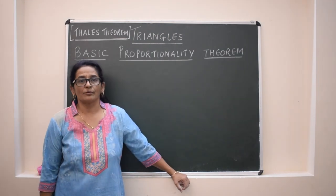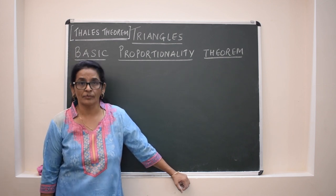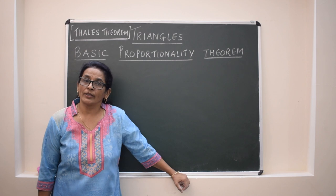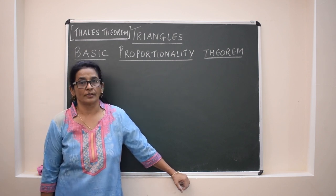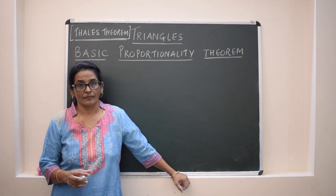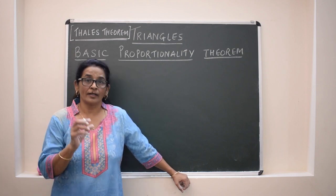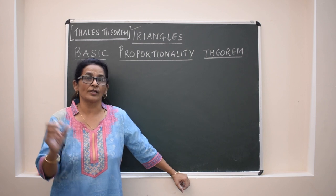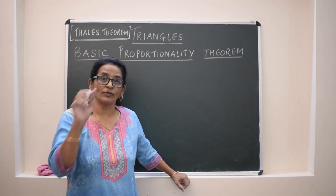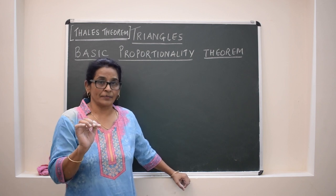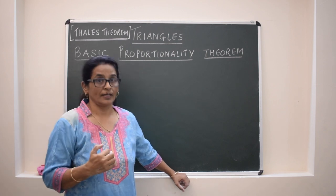Now we will discuss the basic proportionality theorem, which is based on similarity of triangles. Two triangles are similar when the corresponding angles are equal and the corresponding sides are in the same proportion. This theorem is named after the mathematician Thales and is also known as the basic proportionality theorem. In a triangle, we have to take one side and draw a line parallel to that.